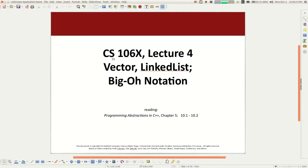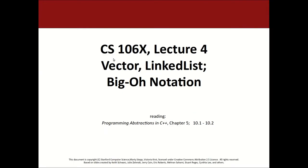Moving on from Grid to another collection called Vector. You've probably heard of this concept before — in Java it's called an ArrayList, in Python it's called a list, in JavaScript it's called an array. Most languages have some structure that stores elements in order with 0, 1, 2, 3 indexes. That's what we call a vector in C++. A vector is in some ways simpler than a grid — we covered grid first because it's needed for the homework.